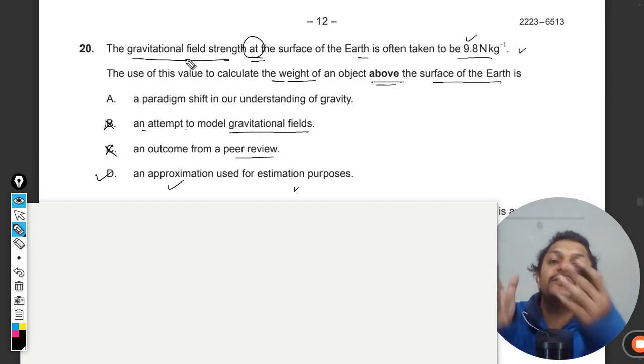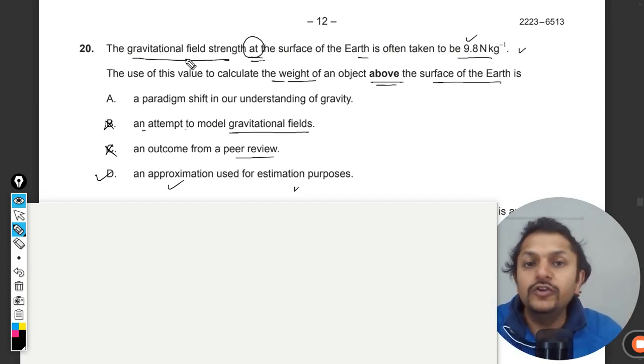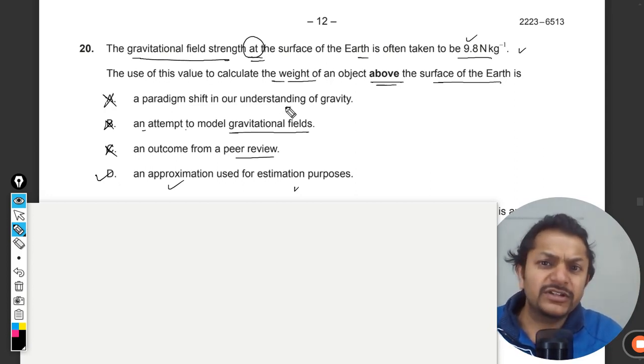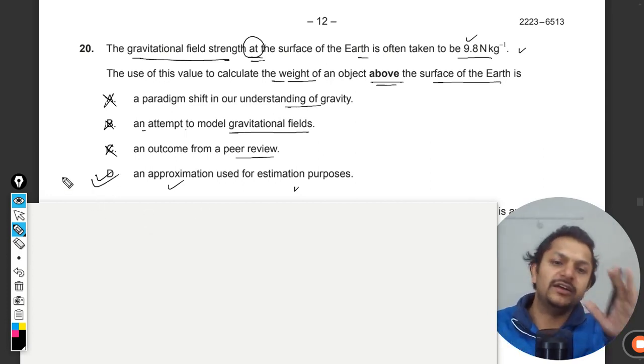Why do you want to find weight? B is wrong. A, the paradigm shift in our understanding of gravity—not at all. So D is the correct answer. This is my explanation.